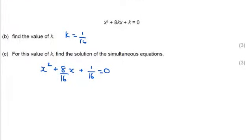If we multiply everything by 16 now, that will get rid of these fractions. So 16x² + 8x + 1 = 0.